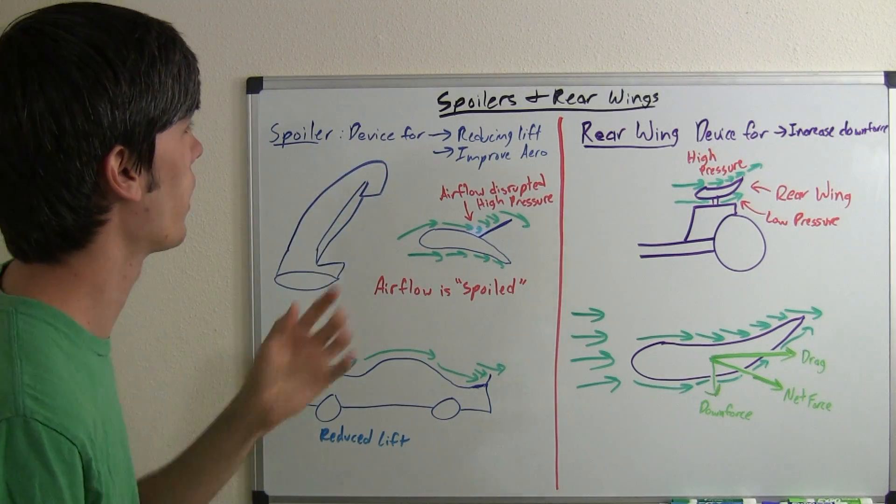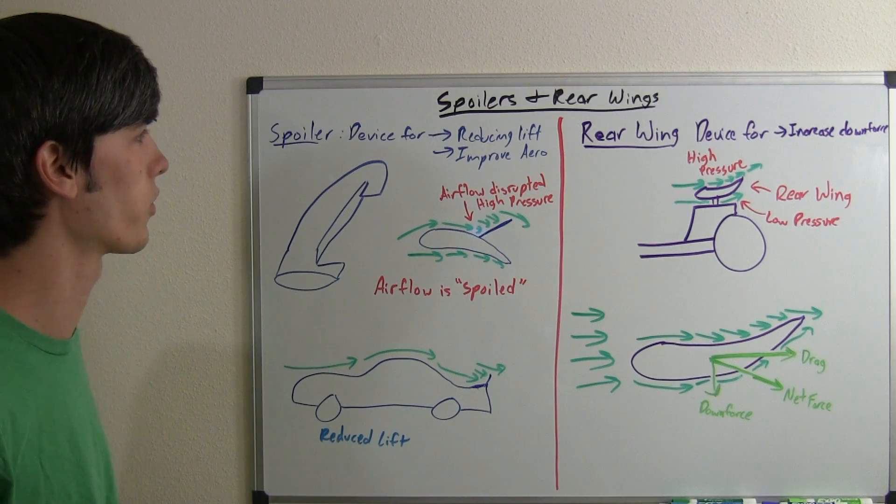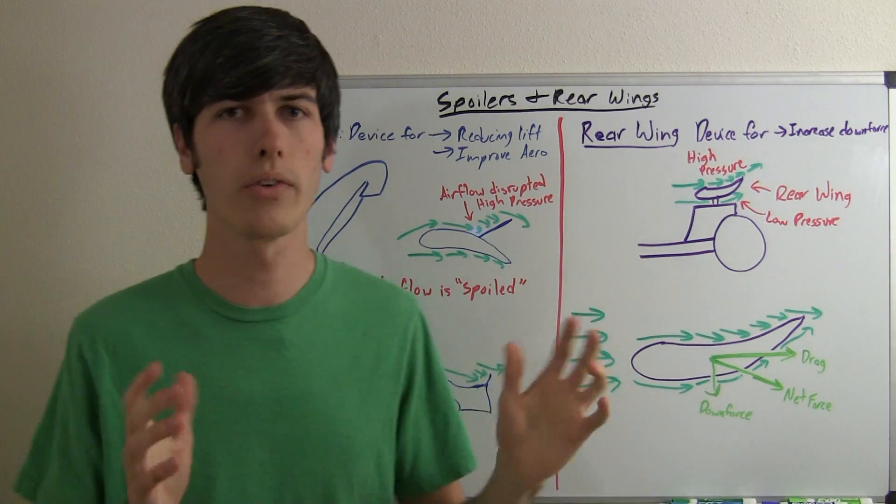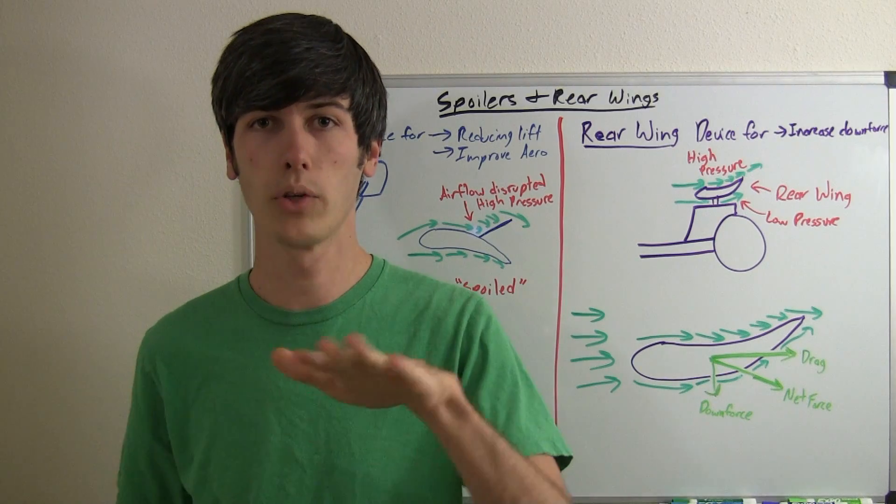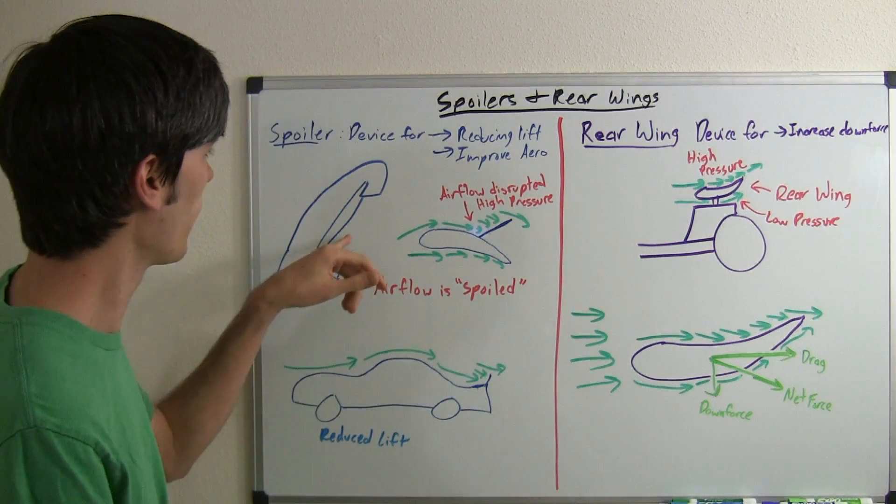A spoiler is a device used for reducing lift and also improving the aerodynamics. So if you've ever rode on an airplane and been looking out the window while you were landing, you've actually watched a spoiler in action.